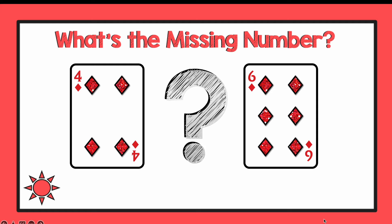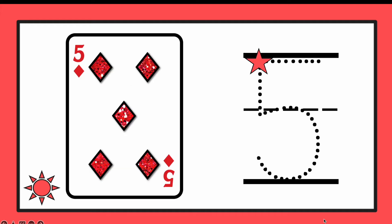What is the missing number? Remember, you're going to write it next to the sun. 5. Nice job. The missing number was the number 5.